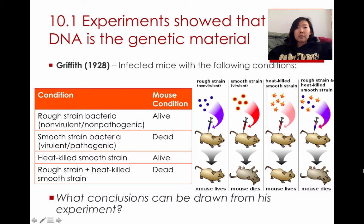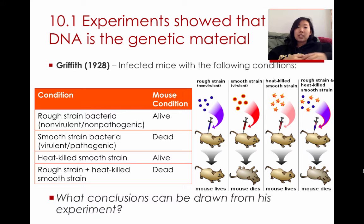Griffith took different types of bacteria and infected mice with them. He found that when he took a rough strain of bacteria — one that is not dangerous to the mice, non-virulent and non-pathogenic — when he infected the mice, they clearly survived. When he took a dangerous form of bacteria called the smooth strain and infected the mice, the mice died.